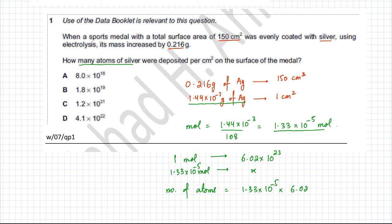We need to find the number of atoms. Using the calculator, multiplying 6.02 times 10 to the power 23 gives me 8.02 into 10 raised to power 18. So it's 8.02 times 10 to the power 18. The closest matching answer to this is option A.